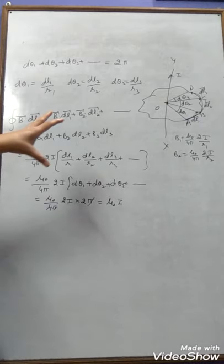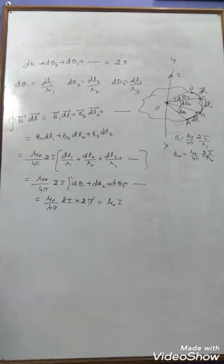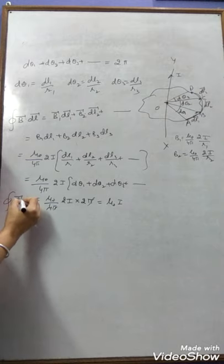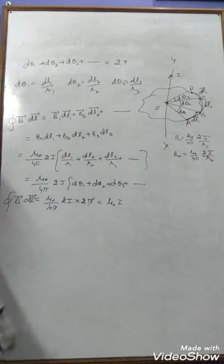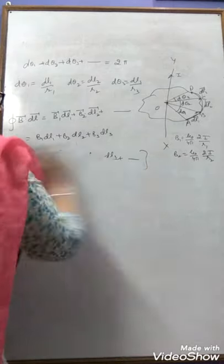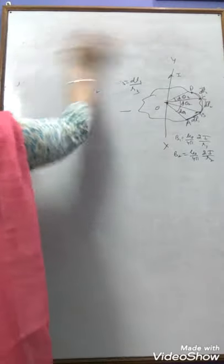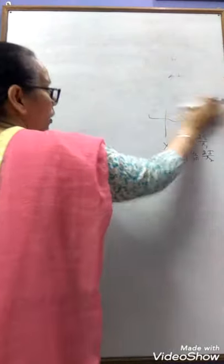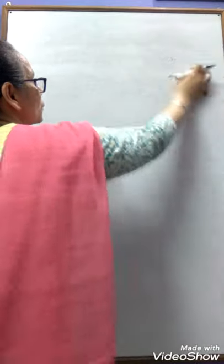We have proved Ampere's Circuital Law for both the circular path and for the arbitrary irregular path. The line integral ∮B⃗ · dL⃗ is called the line integral, while ∮B⃗ · dS⃗ is called the surface integral. Now we have applications for Ampere's Circuital Law. The first application is the solenoid — a long solenoid — for which we calculate the magnetic field inside using Ampere's Circuital Law.